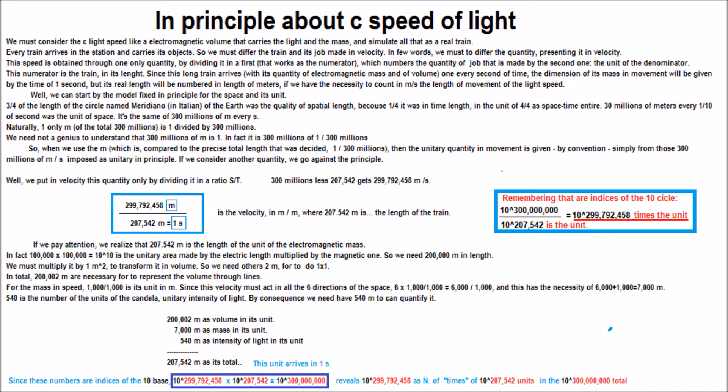We can start by the model fixed in principle for the space and its unit. Three quarters of the length of the circle named meridiano, in Italian, of the earth was the quality of spatial length.